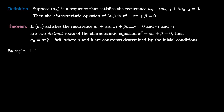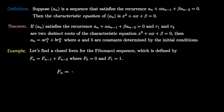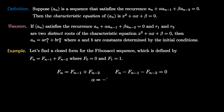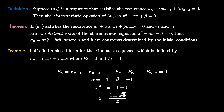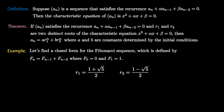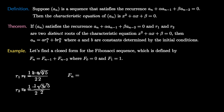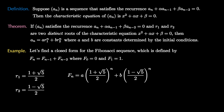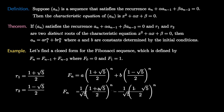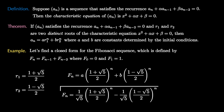Let's see this theorem in action for the Fibonacci sequence, defined by f_n equals f_{n-1} plus f_{n-2}, where f0 is 0 and f1 is 1. Rewriting gives f_n minus f_{n-1} minus f_{n-2} equals 0, so alpha is negative 1 and beta is negative 1, making the characteristic equation x squared minus x minus 1 equals 0. Using the quadratic formula, the two roots are (1 plus root 5) over 2 and (1 minus root 5) over 2. Plugging in the initial conditions and solving for a and b yields the closed formula known as the Binet formula for the Fibonacci sequence.